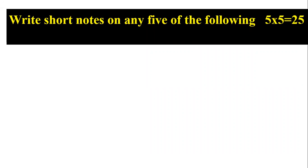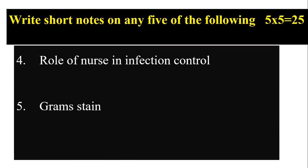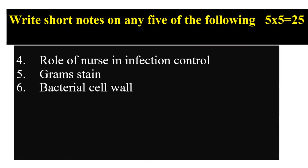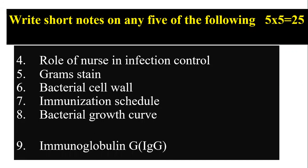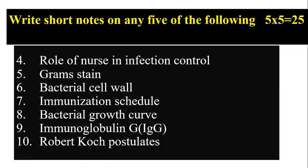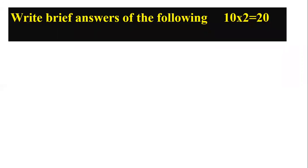The second part is short notes on any five of the following. They will provide seven questions and you have to write five, so two questions can be omitted — that is your choice. Five into five gives 25 marks in part two.